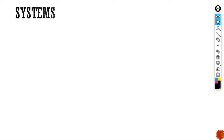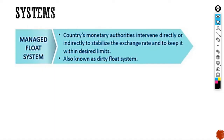First we will go through those three systems. Number one was the Managed Float System. Here the country's monetary authorities — basically the central bank — intervenes directly or indirectly to stabilize the exchange rate and to keep it within the desired limit. So if the central bank has decided an exchange rate, let's say for India 65 rupees equal to $1, and if the rate fluctuates beyond that limit, the central bank will get the rate back to 65 rupees. It is also known as the Dirty Float System.